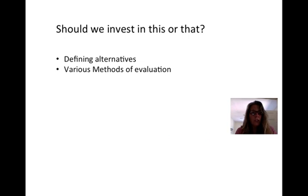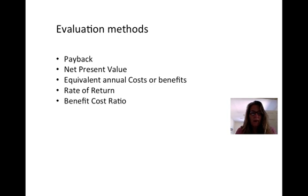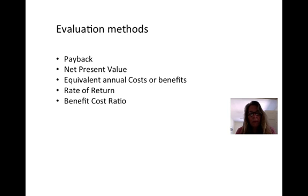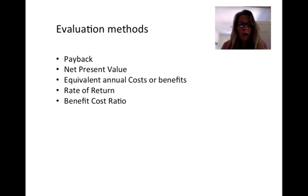Now we're going to look at the different ways we might evaluate these kinds of investment decisions — the different methods of evaluation. There are five general ones that people use: payback, net present value, equivalent annual cost or benefits, rate of return, and benefit-cost ratio.